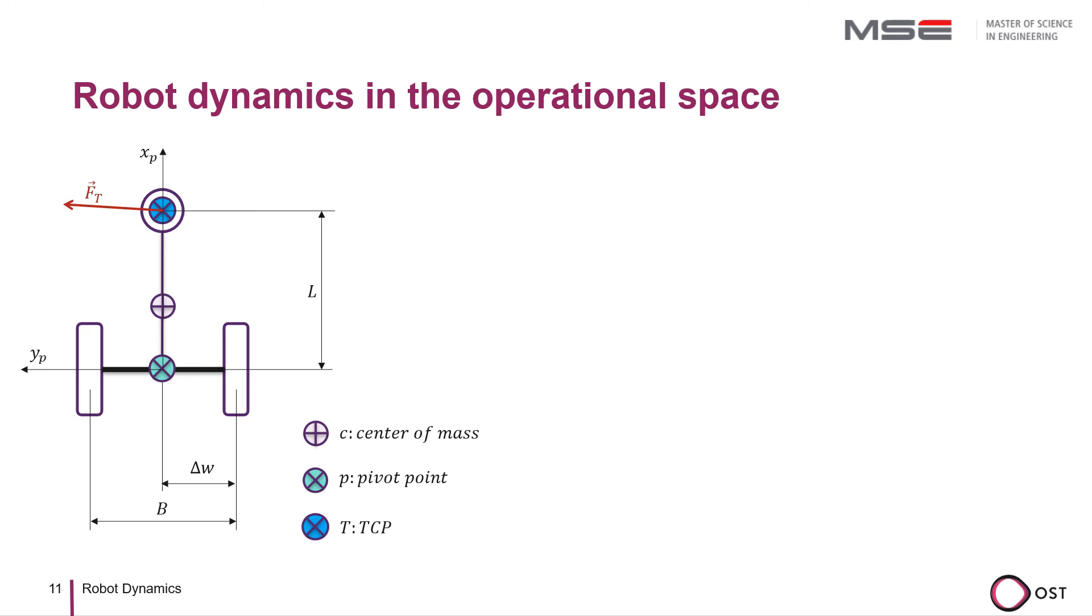Let us imagine that our actuating force acts on the TCP, which leads to an acceleration. In order to be able to calculate the relationship, we want the dynamic equation expressed with Cartesian forces and accelerations.